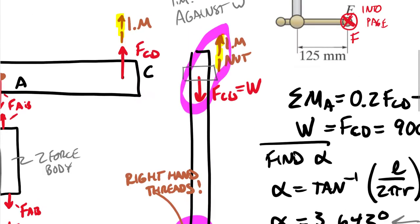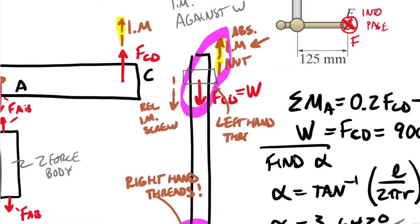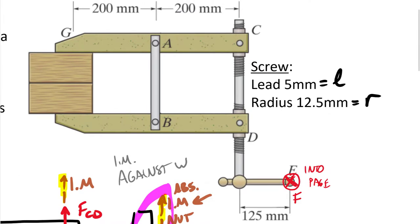At the top of the screw, the relative impending motion of the screw opposes the absolute impending motion of the nut. This opposes the right-hand rule thumb direction, so the upper section at C needs to have left-hand threads. This also means the diagram was actually misdrawn — the upper portion should show left-hand threads and the lower portion right-hand threads.